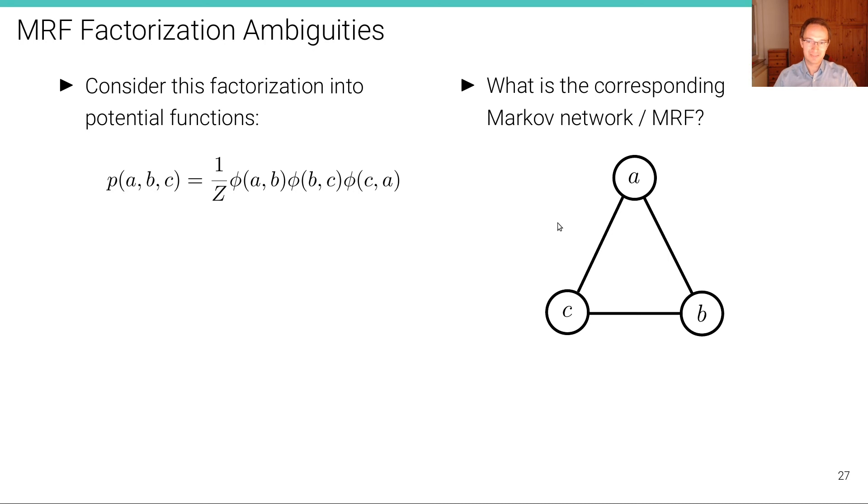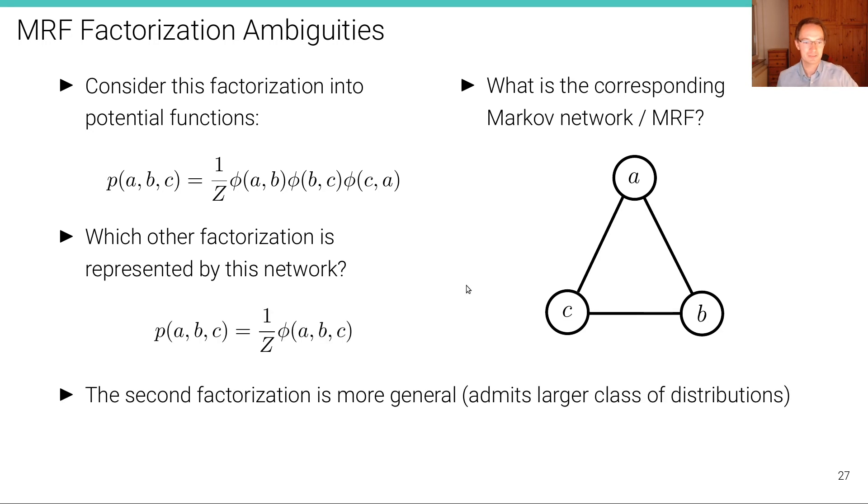However, the maximal clique in this Markov network is the clique A, B and C. So there is another factorization that is represented by this network that represents actually, as we now know, the same set of conditional independence properties. So the same class of distributions in terms of conditional independence properties. And this is the following: we have P of A, B and C equals the normalization and then we have just one potential, which is a potential over all three variables.